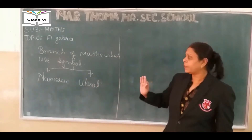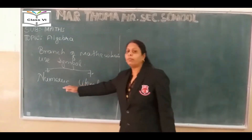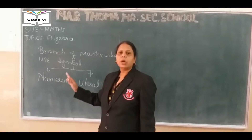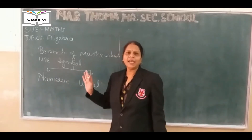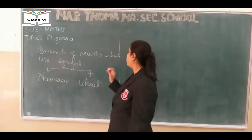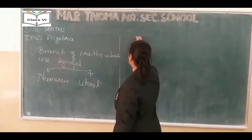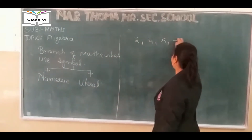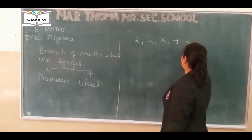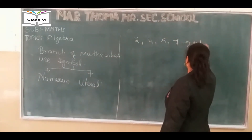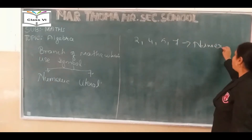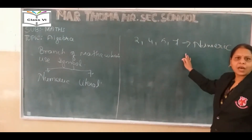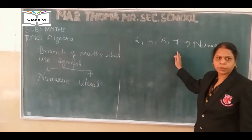As the name specifies, numeric means those symbols which are dealing with numbers. For example, 2, 4, 5, 7 — these are numeric symbols.